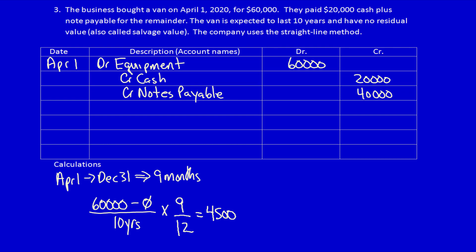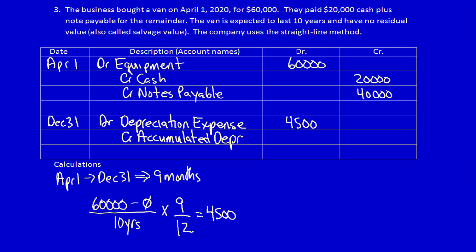At December 31st we have to recognize the use of this asset. What did we get? We got the use of the asset to help generate revenue: debit depreciation expense $4,500. What did we give away? We gave away a portion of the asset — but we are not permitted to credit the actual asset account. Instead we accumulate this in a separate account called accumulated depreciation, a contra account which goes against equipment to reduce it to its carrying value: credit accumulated depreciation $4,500.